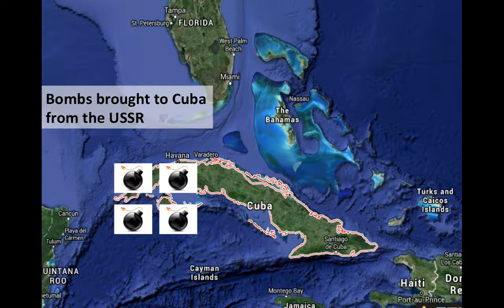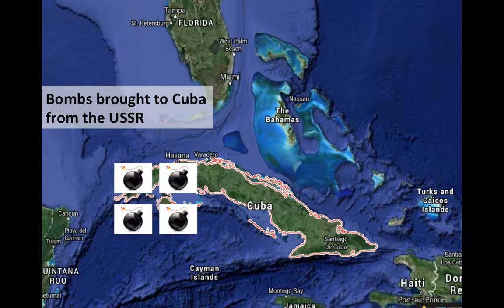Why did the USSR do this? The US and the Soviet Union were competing for world influence during that time. One way to illustrate your power, especially in the 1960s, was to possess nuclear weapons and place them around the world. The US had nuclear weapons in Europe pointed toward the USSR, and the Soviet Union decided it wanted to level the playing field and place nuclear facilities in Cuba pointed toward the US.